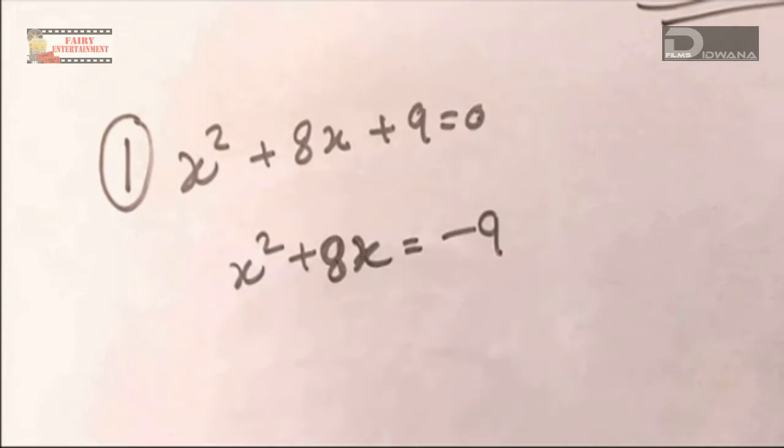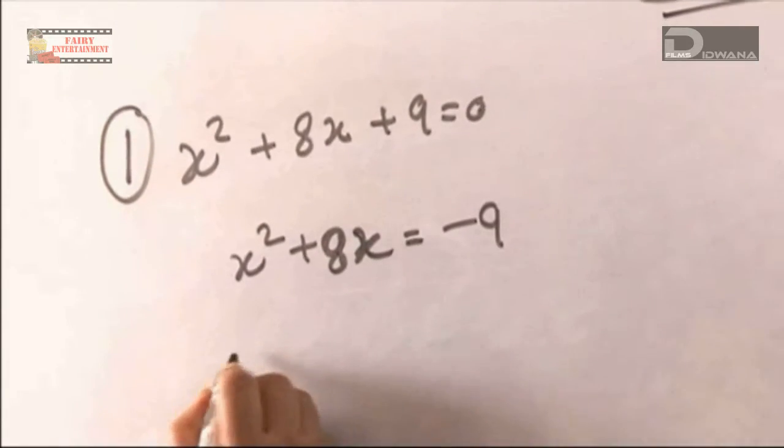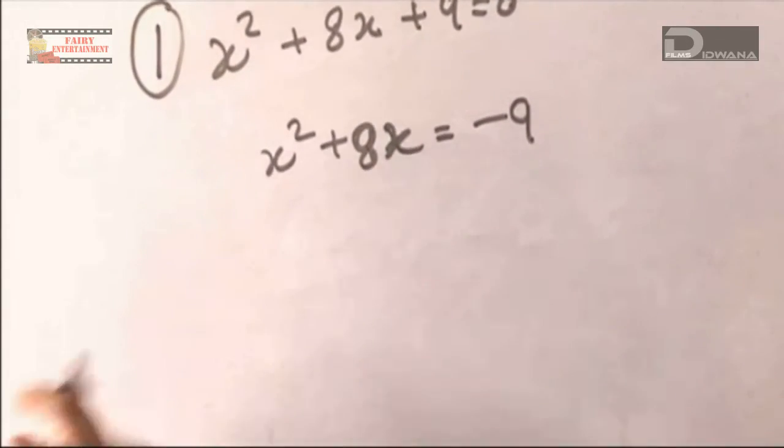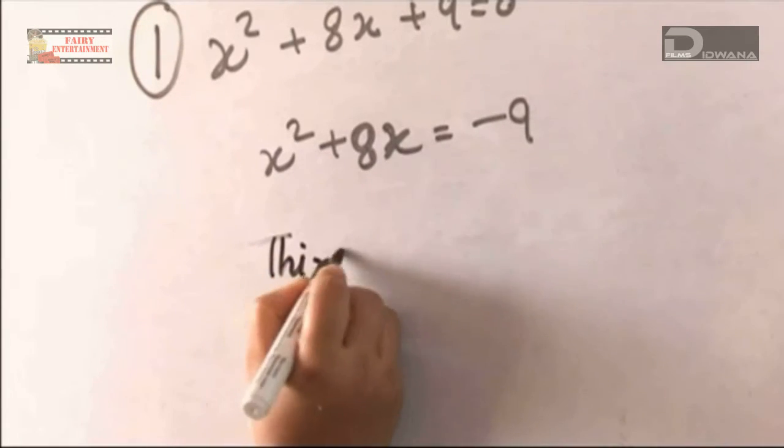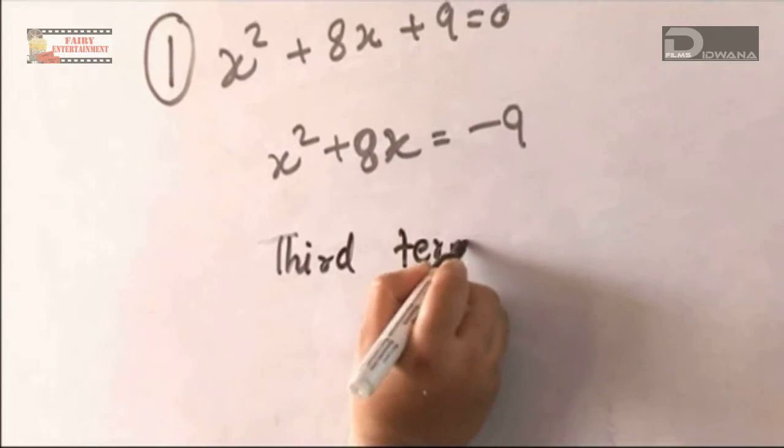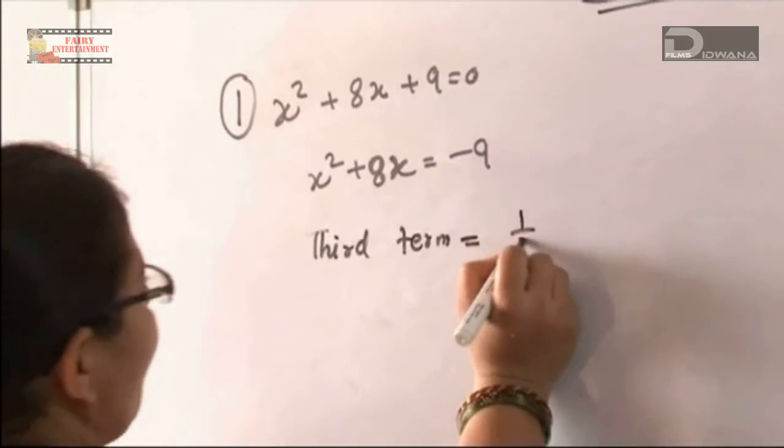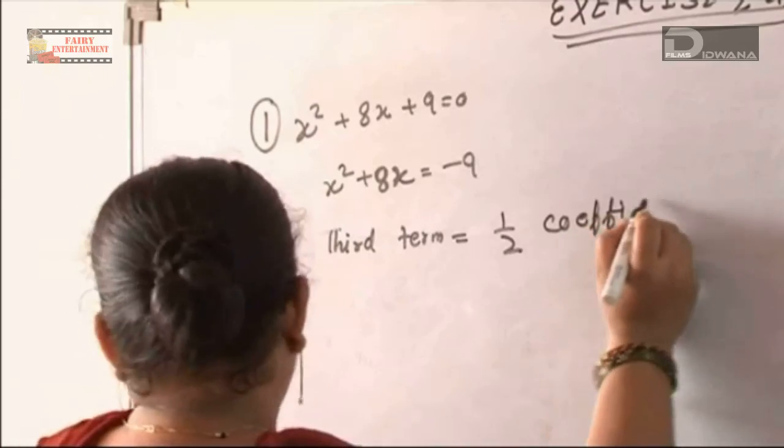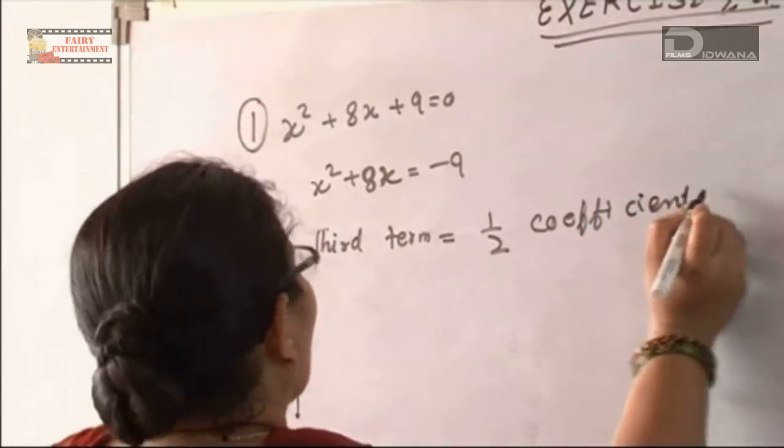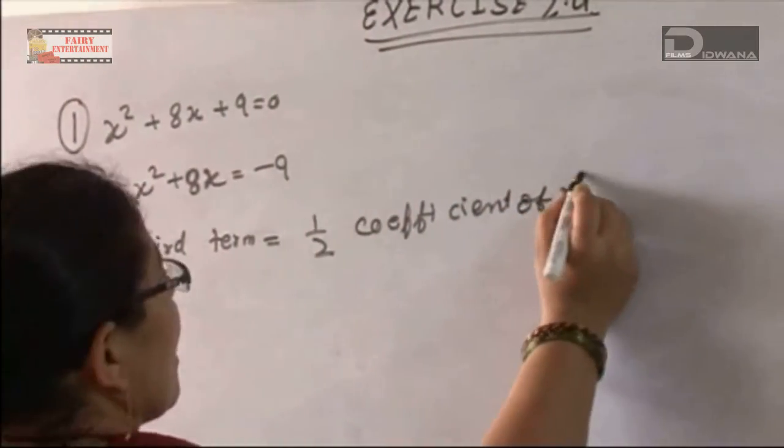So the third term will be half of the coefficient of x, squared.